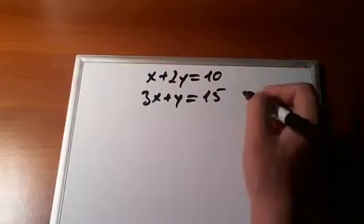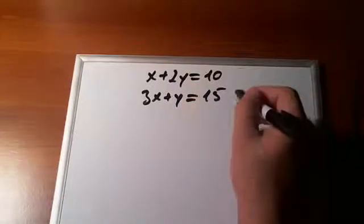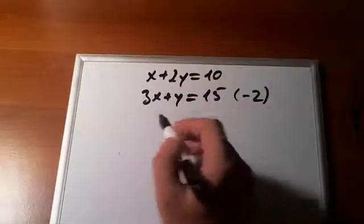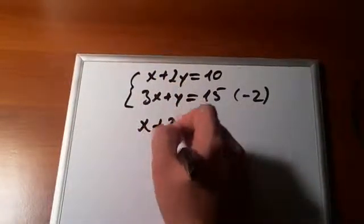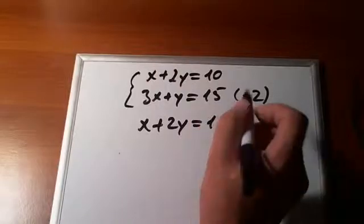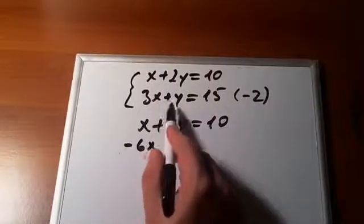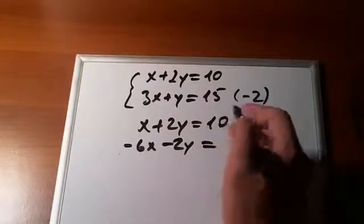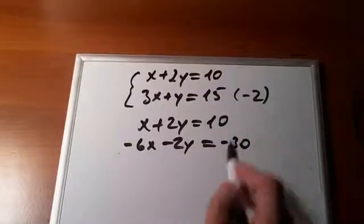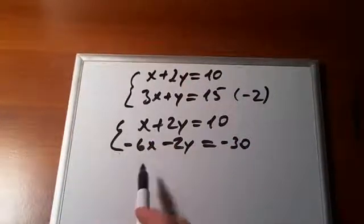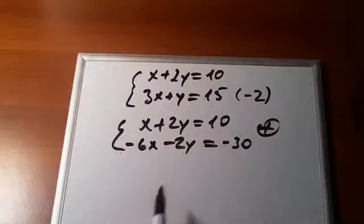But what we can do, let's look at our y term. We can multiply this whole equation by minus 2. Let's just write this one again. x plus 2y is equal to 10. And when we multiply this equation by minus 2, we'll have minus 6x minus 2y is equal to minus 30. 15 times minus 2 is negative 30.